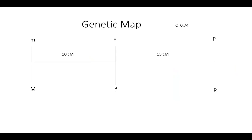Now let's look at a genetic map. There's a few things to look at when looking at a genetic map. First, let's look at the coefficient of coincidence, which is 0.74. Then we have our two genotypes listed, one on the top and one on the bottom. And then we have our two distances, our 10 centimorgans and our 15 centimorgans.